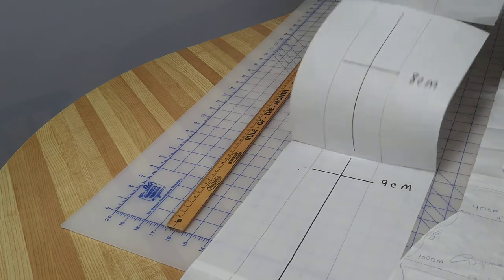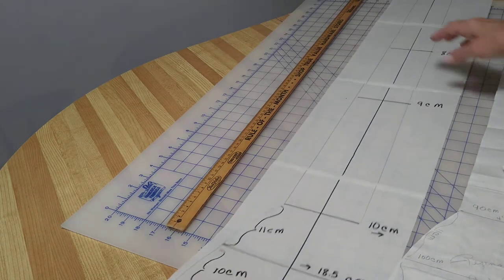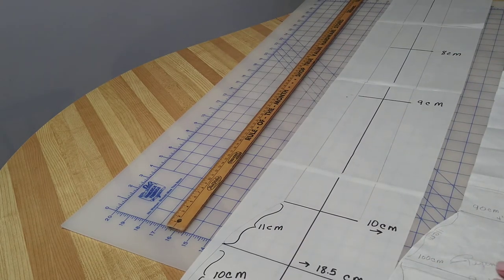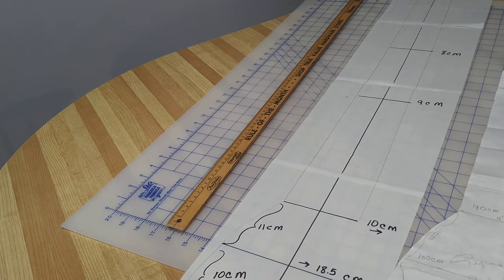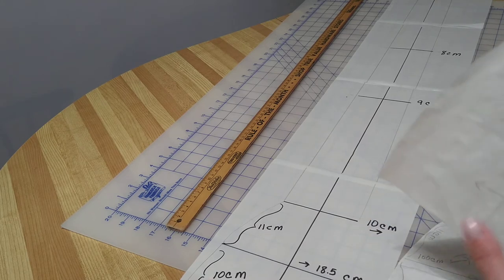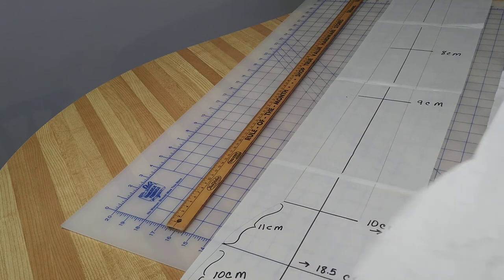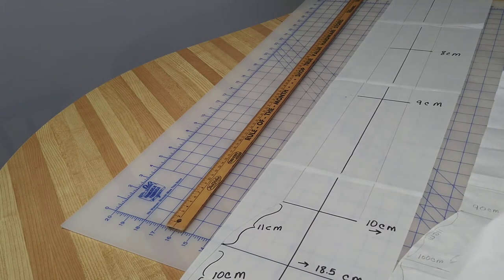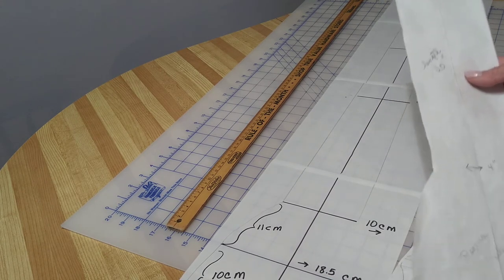Okay, for the manifold. The manifold pattern is going to be the same at the bottom as the stole is. So all you have to do is measure from the bottom 51 centimeters up. Do it in two spots.